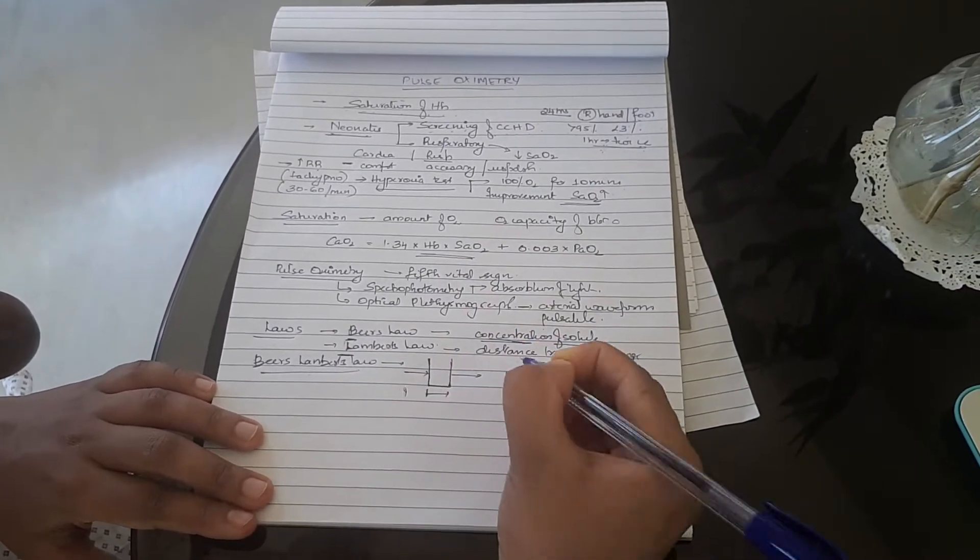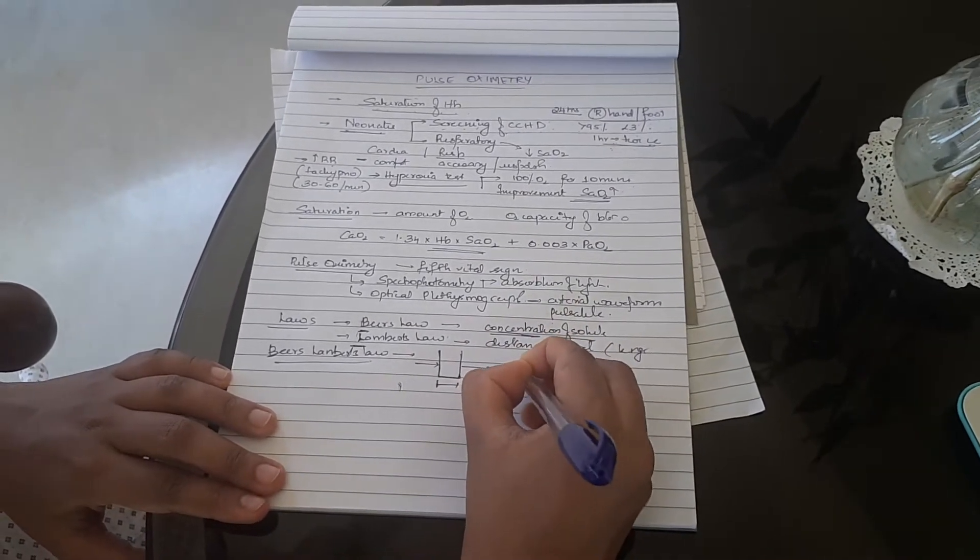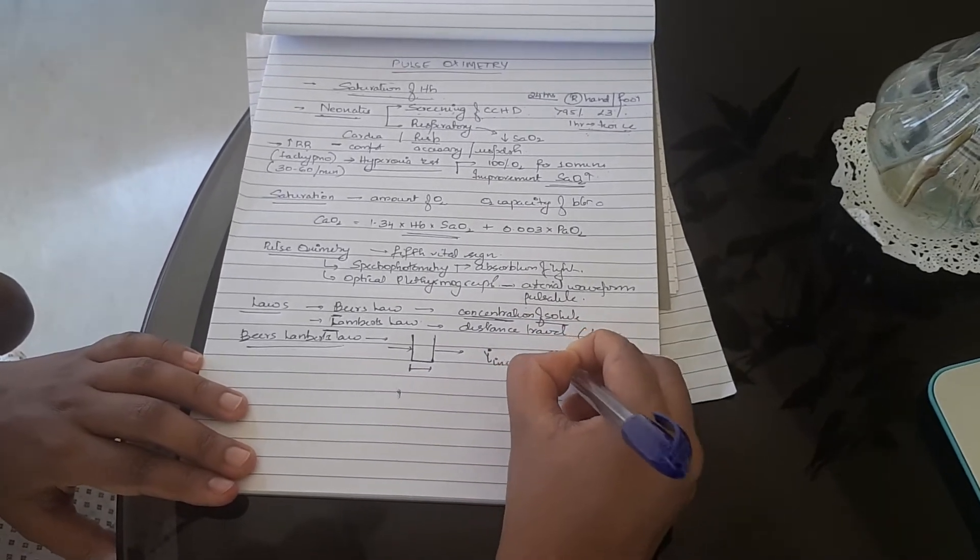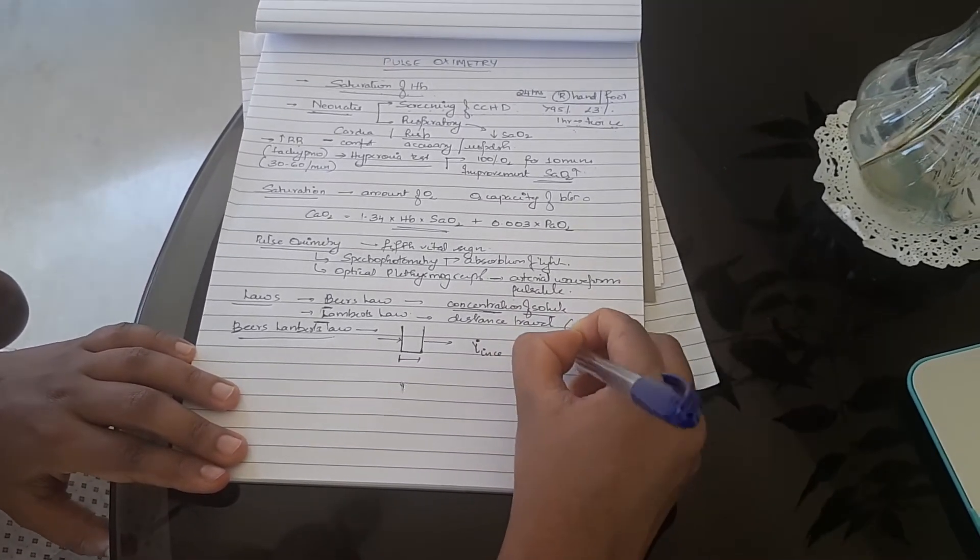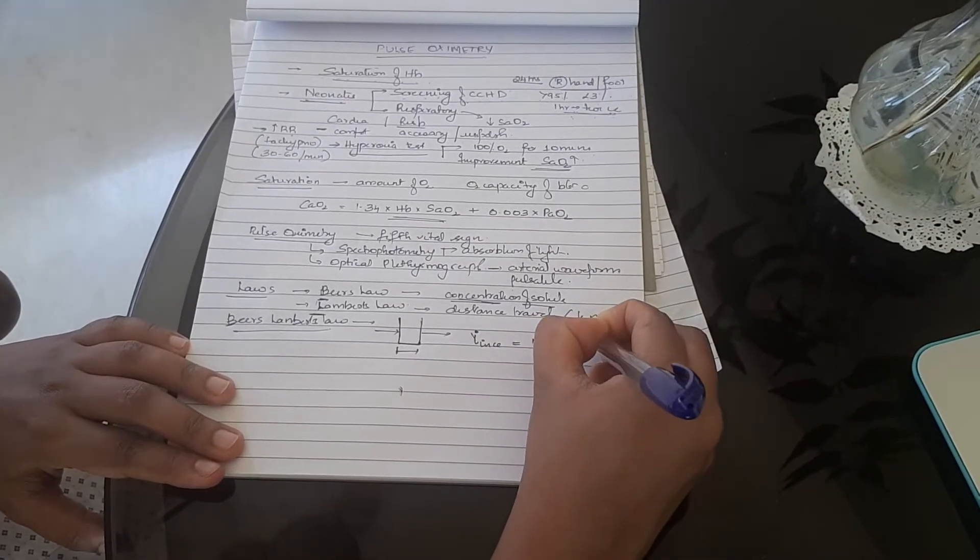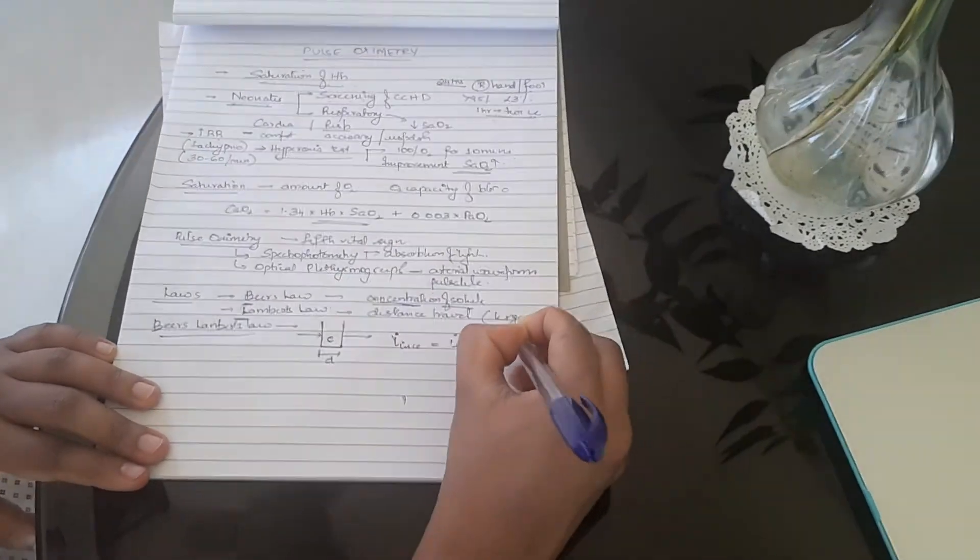This is also written as incident light - I as light - so this is the incident light. The incident light is equal to the transmitted light raised to a negative exponential of concentration of the solute into the distance travelled, D. Inside this would be concentration into E.